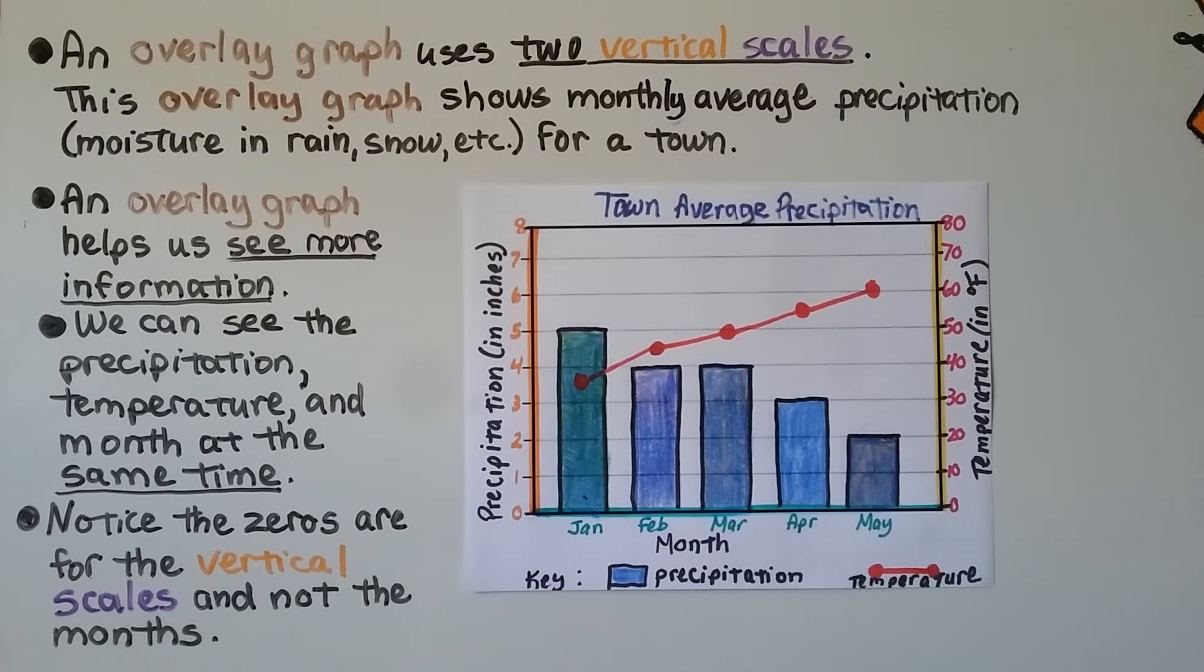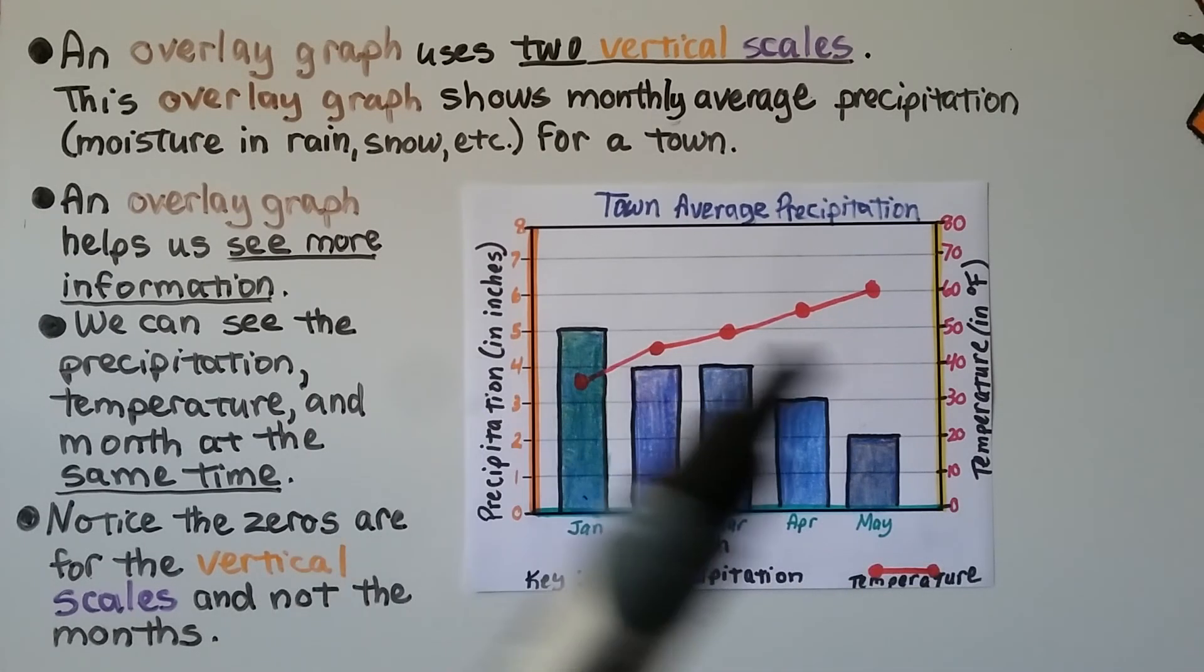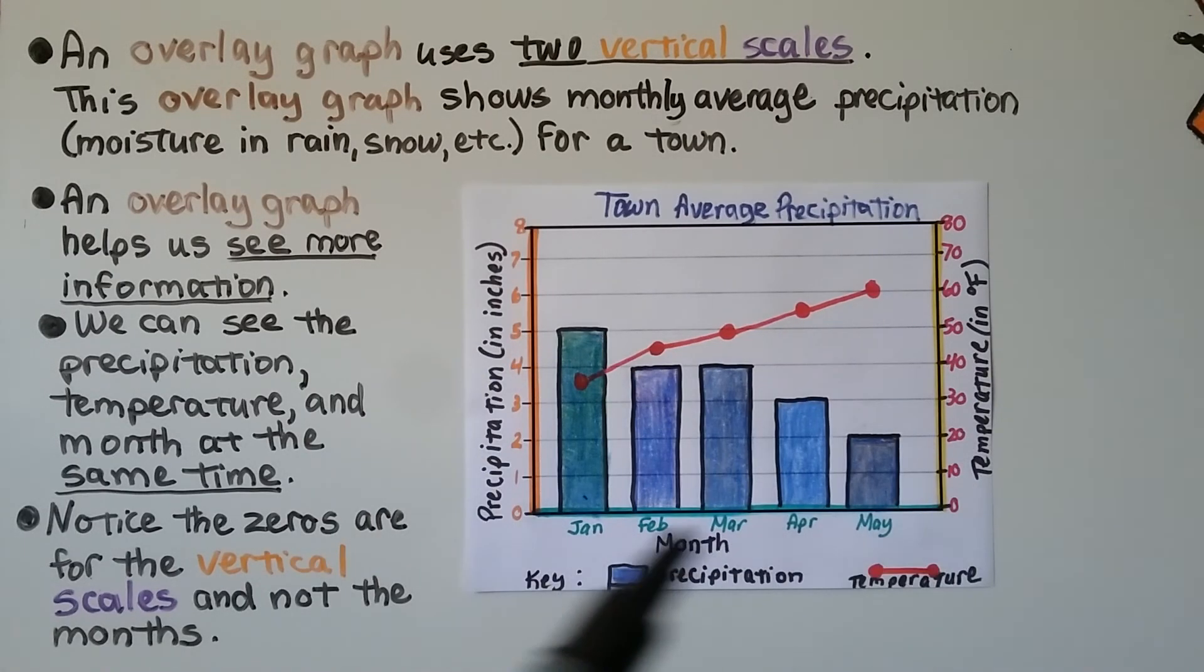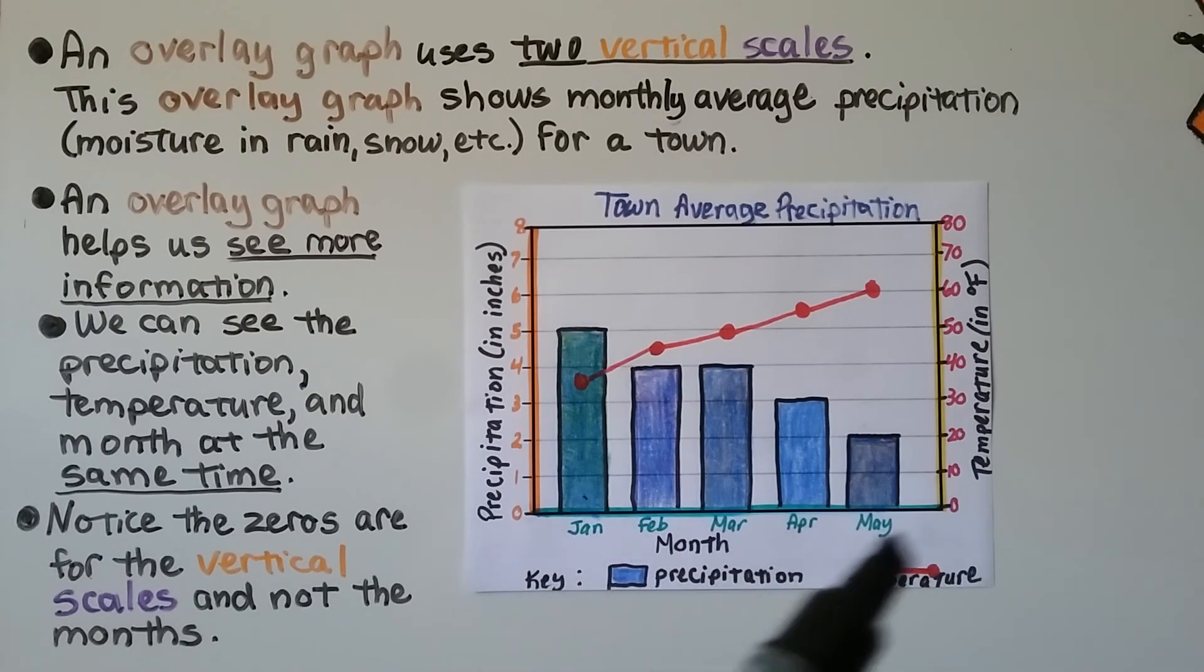An overlay graph helps us see more information. We can see the precipitation, the temperature, and the month at the same time. And notice the zeros, there's a zero here, and there's a zero here, are for the vertical scales. They're not for the months. We don't have a zero month.